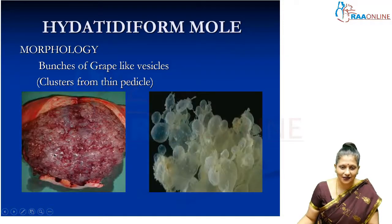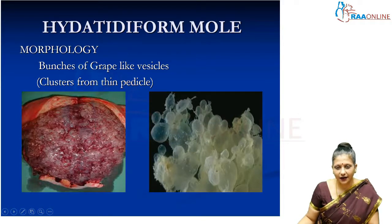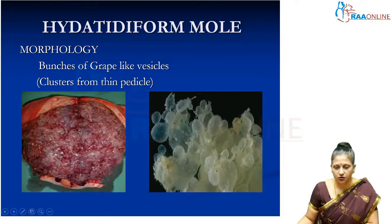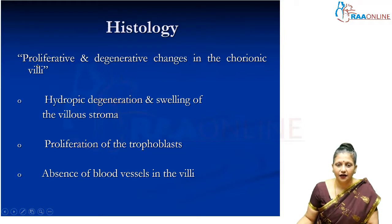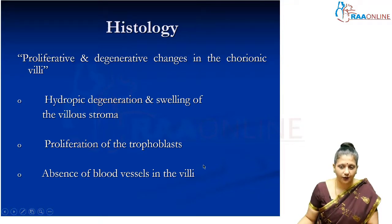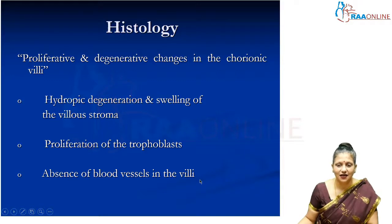These vesicles can be seen by naked eye and they look grape-like, so they are characteristically called grape-like vesicles. They form clusters with very thin pedicles and this appearance is also called a currant jelly color. The proliferative and degenerative changes in the chorionic villi are characteristic, with swelling of the villus stroma, proliferation of trophoblast, and no fetal blood vessels in the degenerated tertiary stem villi.